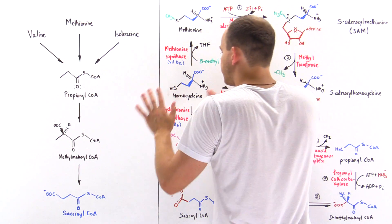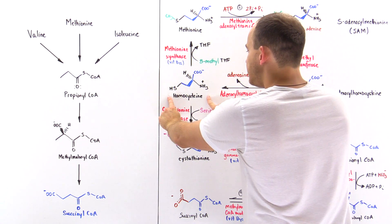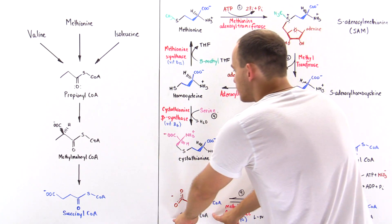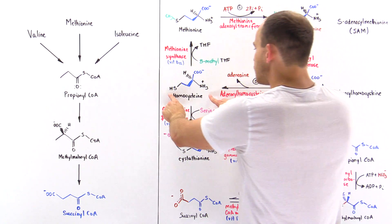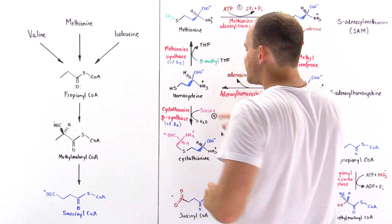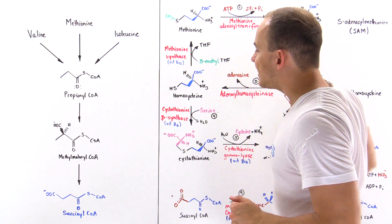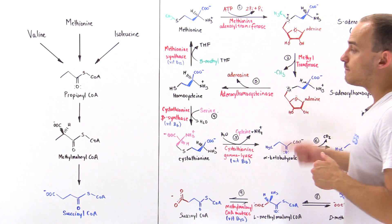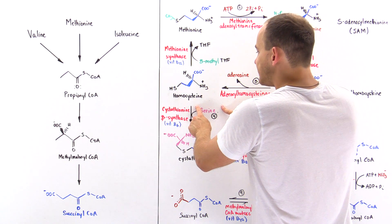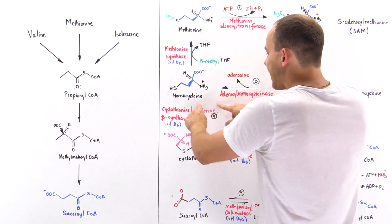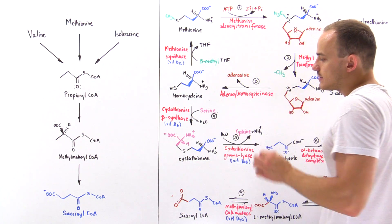What we want to focus on in this lecture is how we use methionine to create homocysteine and then use that to ultimately generate succinyl coenzyme A, which can be used by our liver cells to generate glucose molecules. The homocysteine undergoes a reaction catalyzed by cystathionine beta-synthase, which uses vitamin B6 — pyridoxal phosphate. We take a serine, remove water, and attach that serine onto the sulfur to form the intermediate cystathionine.